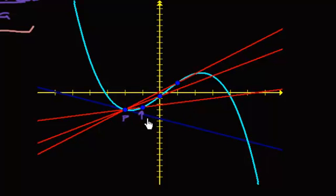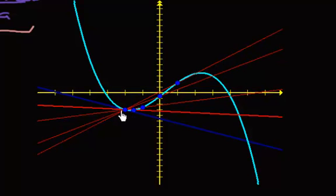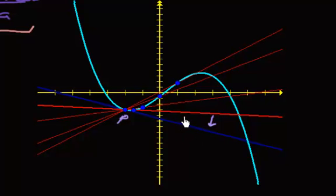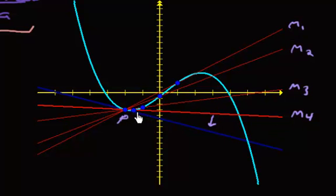Let me take one more point and get pretty close. Here's my new secant line connecting these two points. As the point gets closer and closer to P, the secant lines get closer and closer to my tangent line. If you're familiar with limits — each one of these secant lines had a slope: slope 1, slope 2, slope 3, slope 4. If you take the limit of these slopes as the secant line eventually becomes the tangent line, we get the slope of the tangent line.